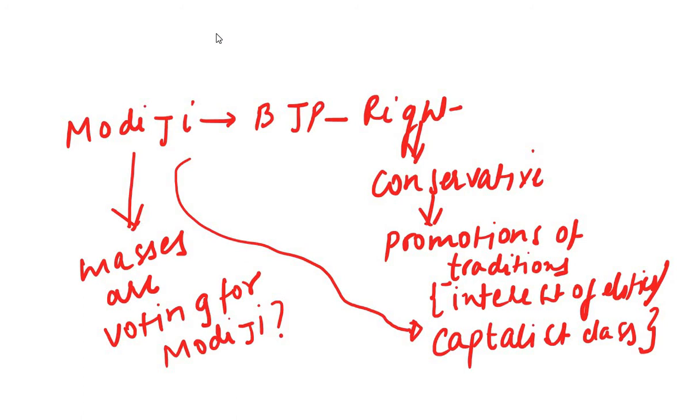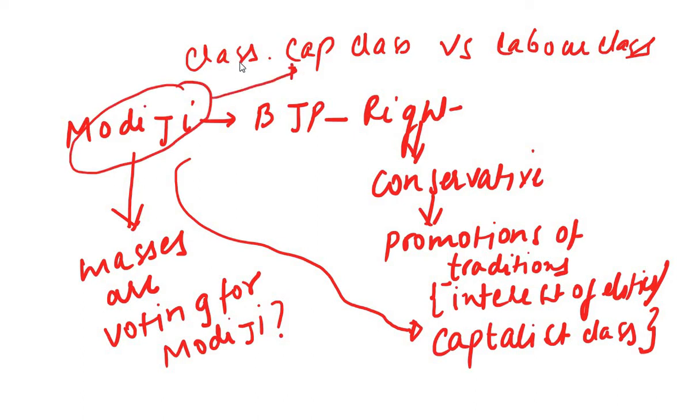Society can be defined as a class struggle between the haves and have-nots. In a capitalist society, there is a class struggle between the capitalist class versus the labor class. So why is Modiji, who is an agent of capitalist class, being voted by the labor class? We understand that capitalist class or even the middle class in India don't vote that much. The whole voting percentage is around 40% or less, around 38.9%, which primarily constitutes labor class. There is a reason why labor class is supporting Modiji even though he is supporting the interest of capitalist class.